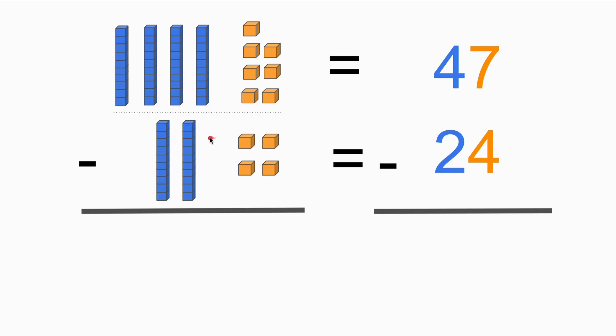Let's take a look at the second row. The blue blocks, there are two tens, one, two, and four ones, one, two, three, four. So we have 24 here.